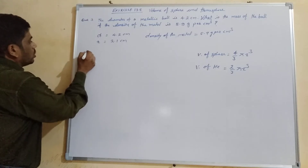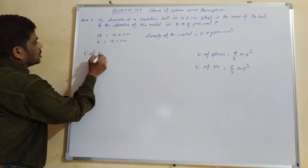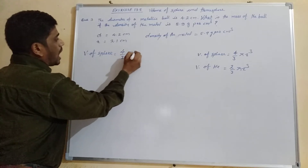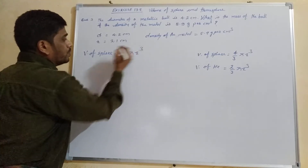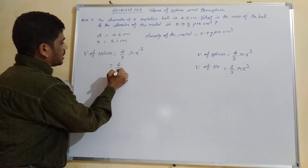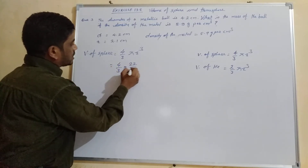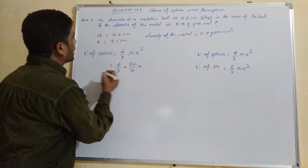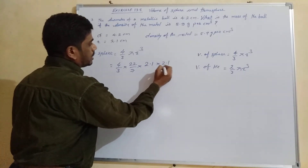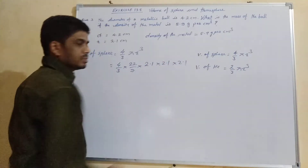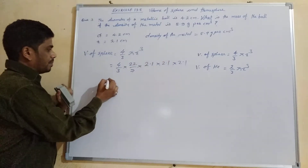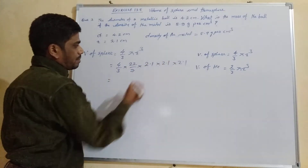Volume of a sphere equals 4/3 π r³. So we have 4/3 × (22/7) × (2.1)³, which is 2.1 × 2.1 × 2.1. Let's remove the decimal from all the numbers to simplify the calculation.